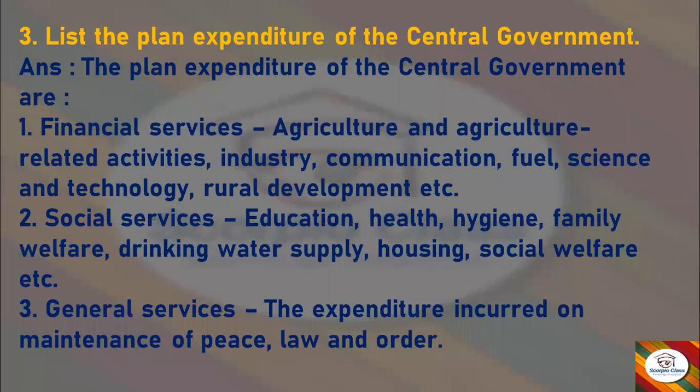Next question: list the plan expenditure of the central government. Answer: the plan expenditure includes — financial services, agriculture and agriculture-related activities, industry, communication, fuel, science and technology, rural development, etc. Second: social services — education, health, hygiene, family welfare, drinking water supply, housing, social welfare, etc. Third: general services — expenditure incurred on maintenance of peace, law and order.